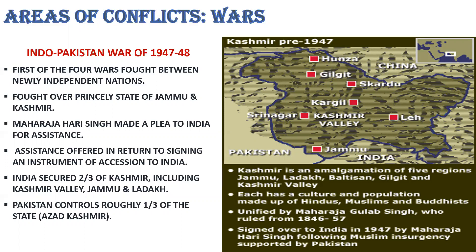He was a Hindu who ruled over a majority Muslim princely state. He did not want to merge with India or Pakistan. Kashmir is important for both India and Pakistan because of its strategic location on the borders of India, Pakistan, Afghanistan and China. Pakistan insisted that the Muslim majority state should join Pakistan. The Maharaja faced an uprising in Punjab and lost control of the western districts. In October 1947, Pakistan's Pashtun tribal forces crossed the border of the state. Maharaja Hari Singh requested India for assistance.